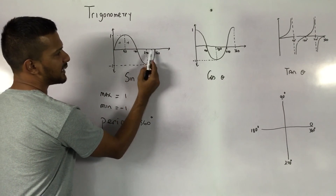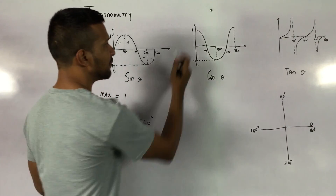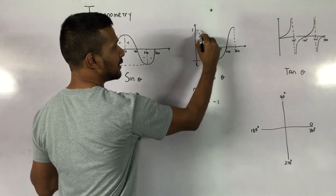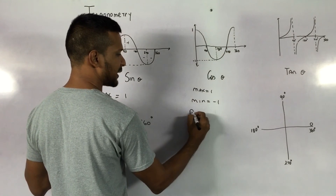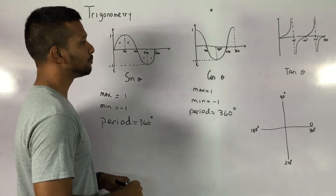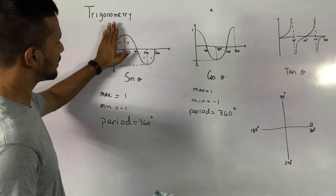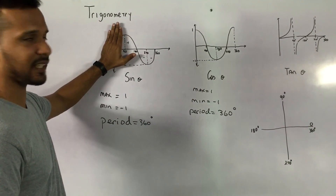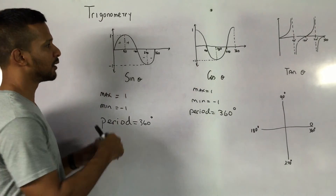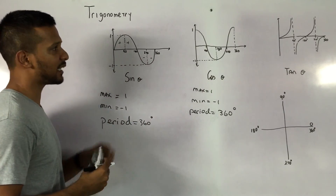Between 180 and 270, sine values are negative. Cosine is very similar — it has a maximum value of one and a minimum value of minus one, and this cycle also repeats after 360 degrees, so the period is 360 degrees. If you look at the cos graph and the sine graph, they basically look the same. If I were to cut off 90 degrees of sine, it looks exactly like cosine, so sine and cosine are just shifts of each other.